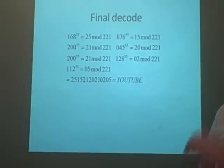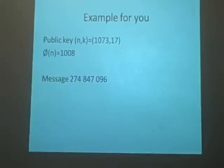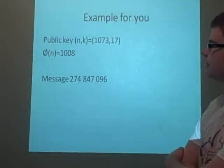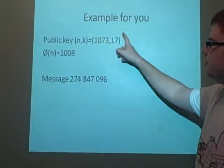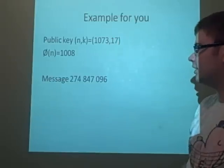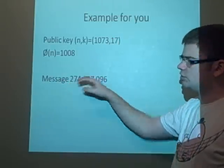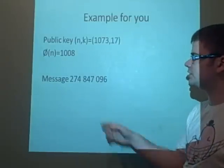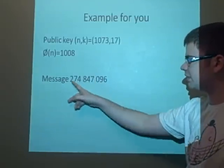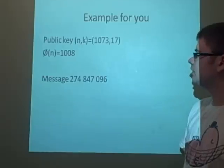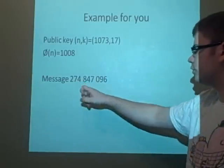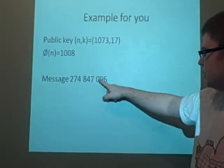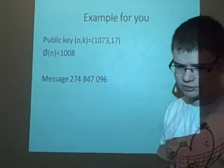Now I've got an example here, which I want you to post in the comments, if you can do it. So we've got the public key n, k, which is 1073 and 17. I can give the psi of n, because you're the person that sent it. So this is the message we're sending you back. So I want you to decode it, if you can, and tell me what it says. So we've got 274 I've sent you, and I've sent you 847 and I've sent you 096. So just post in the comments.